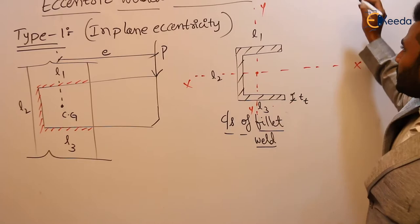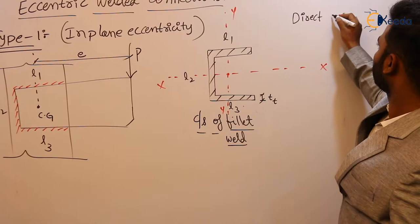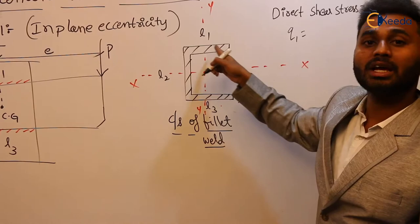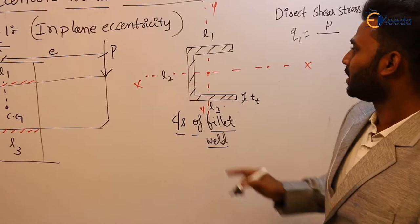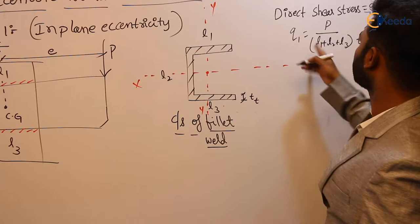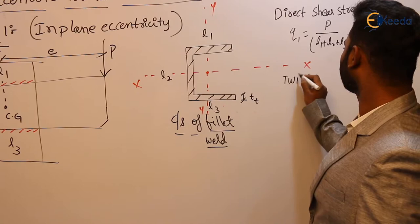Now, we know that this weld group is subjected to a direct load P and a twisting moment Pe. Because of direct load P it experiences direct shear, and because of twisting moment Pe it experiences twisting shear. The direct shear stress q1 equals the load divided by the cross-sectional area of the weld: q1 = P / ((l1 + l2 + l3) × t_t).